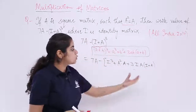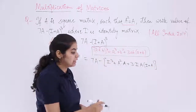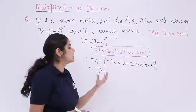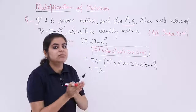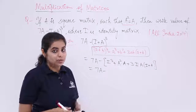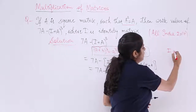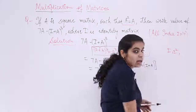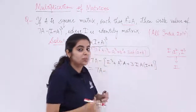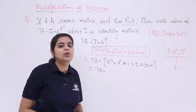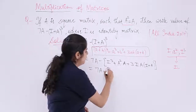Now let's simplify this bracket. 7A remains as it is. I³ means multiplying the identity matrix again and again — we know that multiplying the identity matrix any number of times still gives the identity matrix. So I³ remains I only.